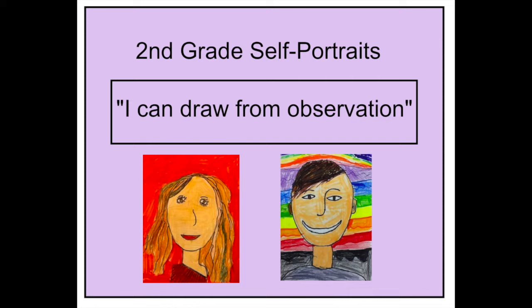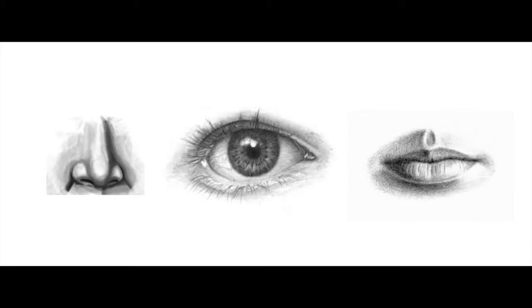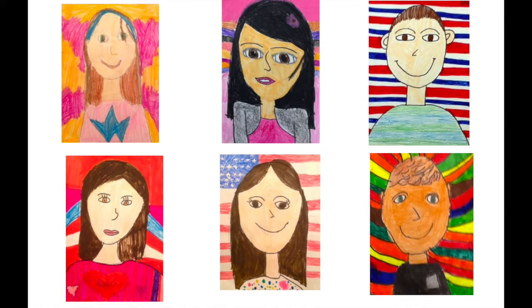During the drawing of your second grade self-portraits, you are going to show me that you can draw from observation. That means by looking closely at something and trying to match what you see. You can try to match the shape of your nose, your eyes, and your mouth to what you really look like, including your hair color and your eye color.